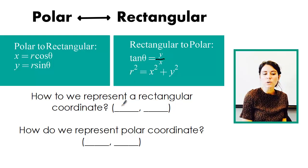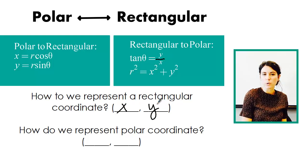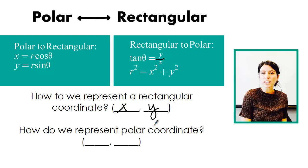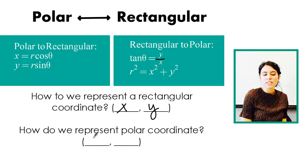So a rectangular coordinate is what you have seen probably for a really long time. That's your xy coordinate. A polar coordinate is what you should have learned if you watched the first video on the basics of polar coordinates. That's represented by r theta.